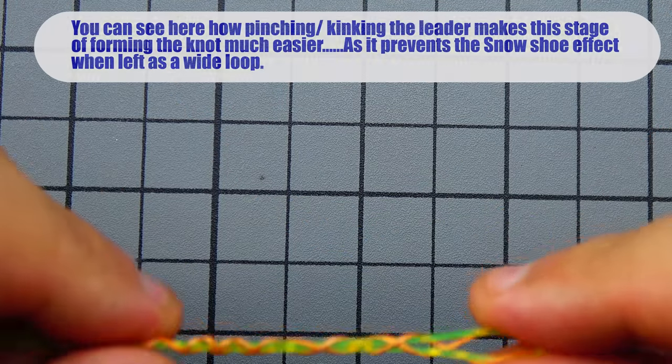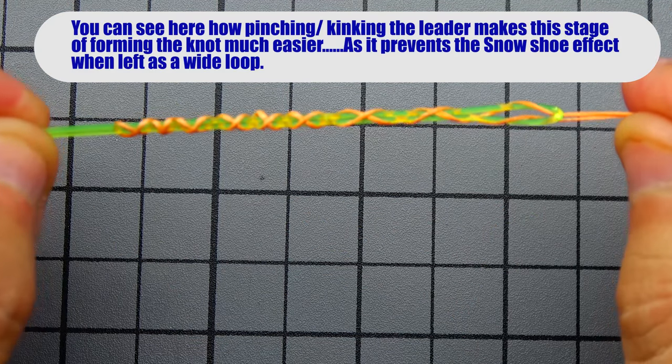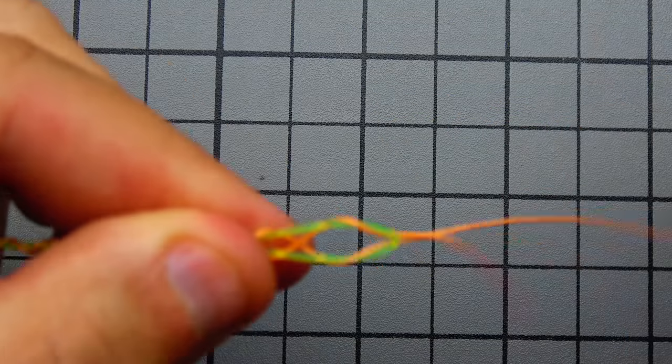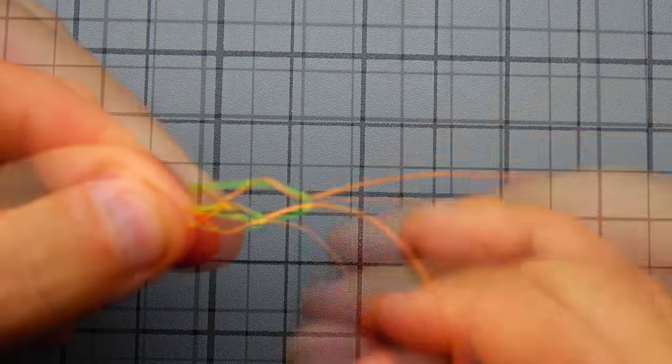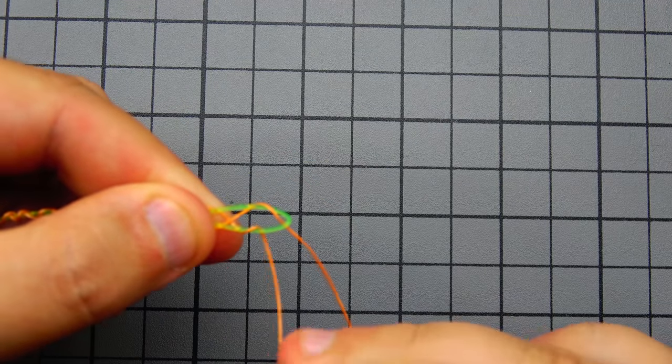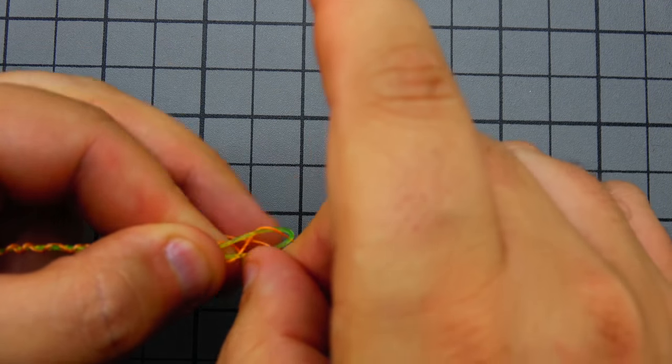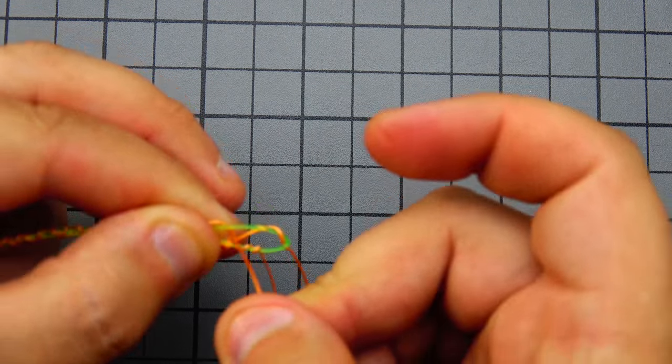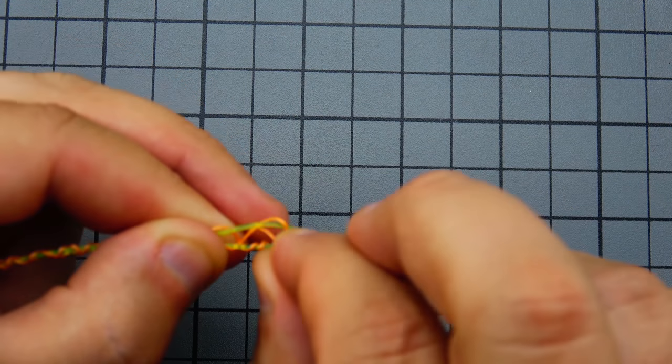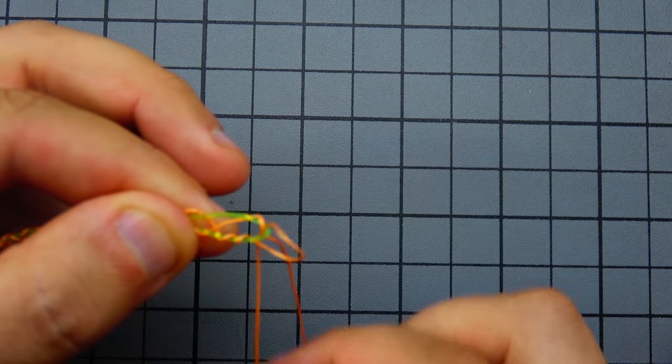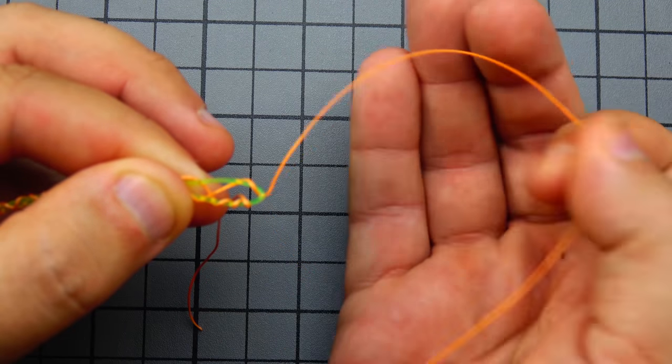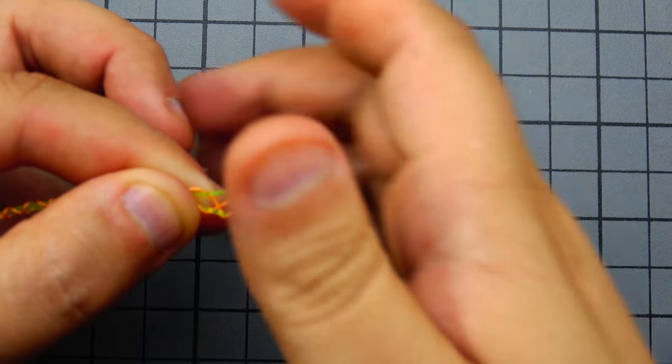Now, here we are. This is where 90% of the tutorials in this knot tell you to now cinch it down. I'm going to tell you to make one simple modification and that's to take that tag in again and just bring it back through the same way you just went. And now do it one more time. So instead of taking that tag and following the main line back through that loop once, you're going to do it a total of three times. So two more times after that first time.